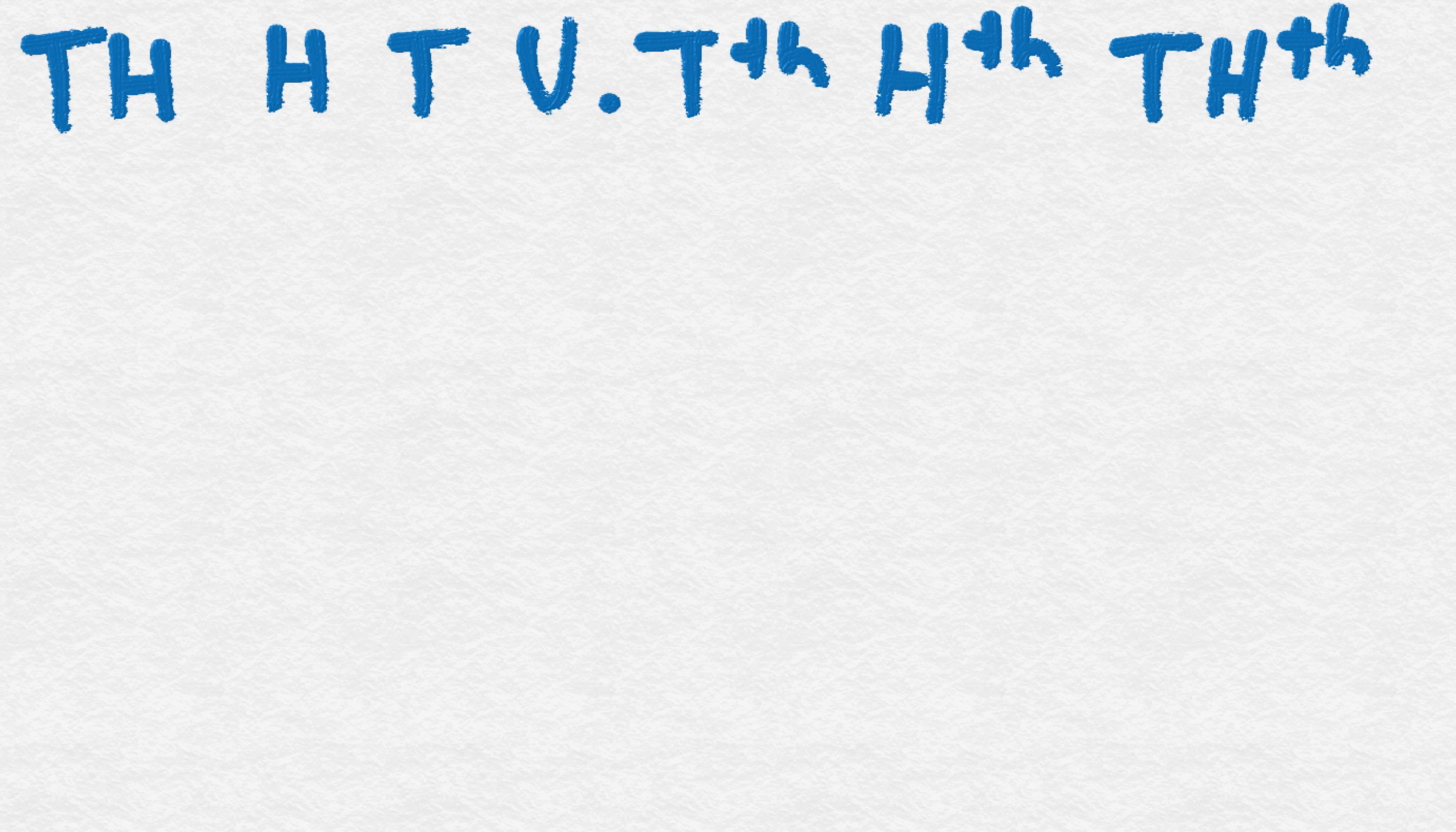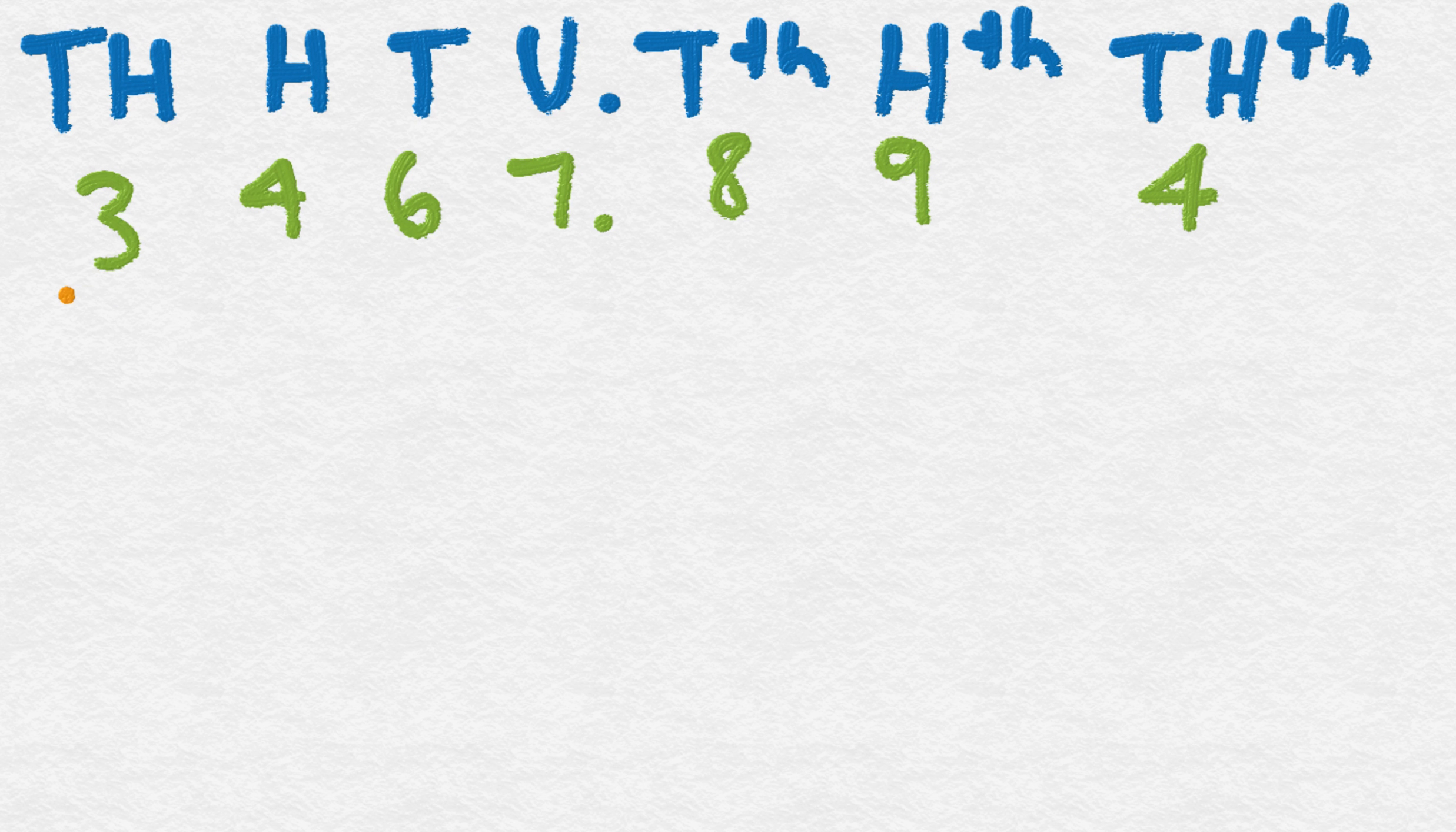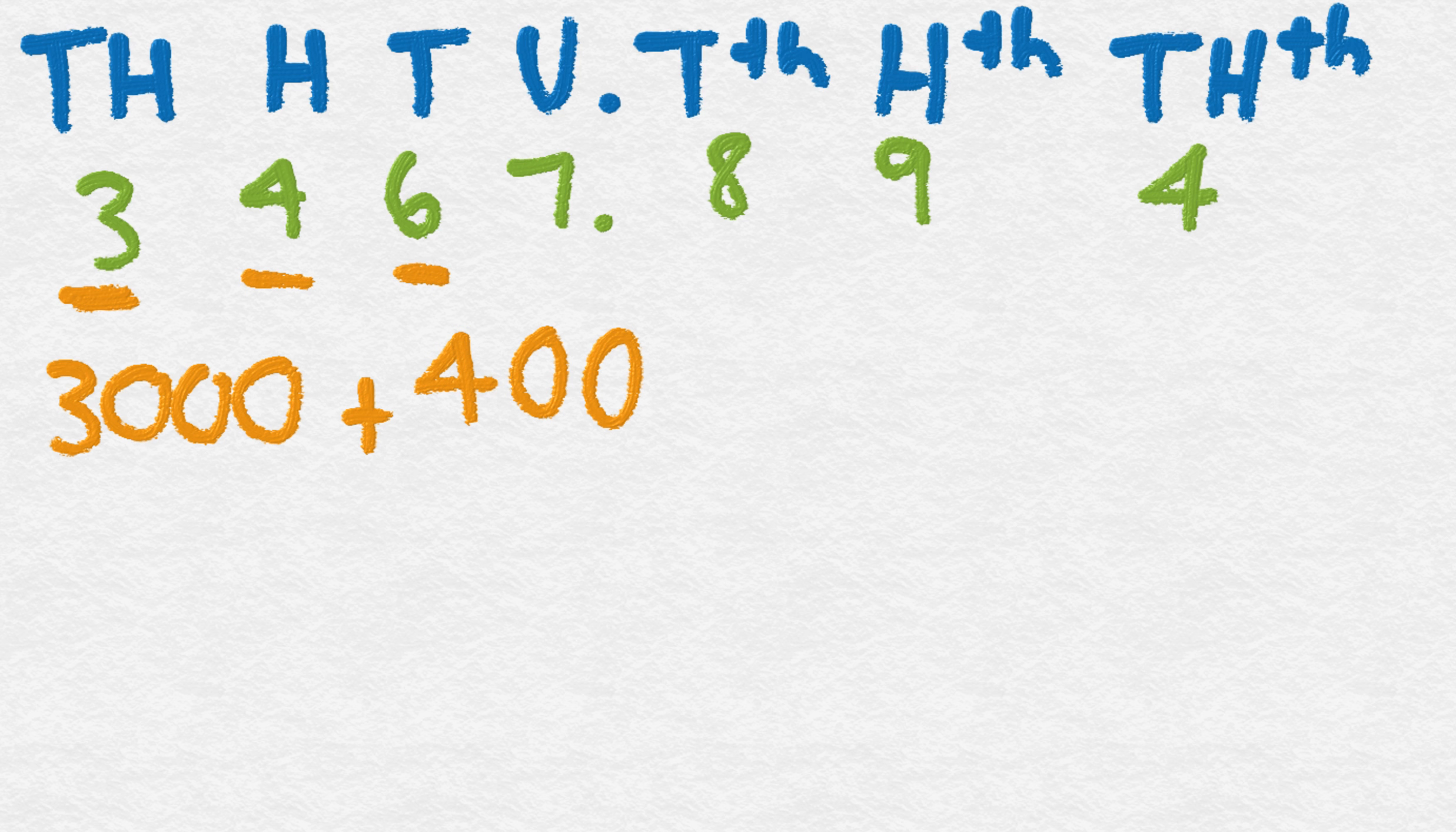Look at another example. This time we're going to expand it just using the decimals without the fractions. So let's have a look. First of all, we've got 3,000, plus 400, plus 60, plus 7 units.